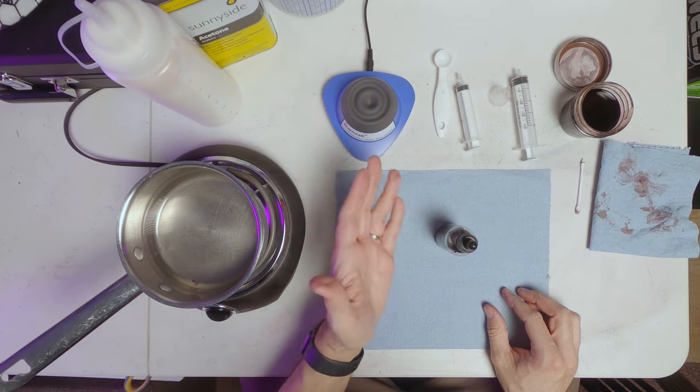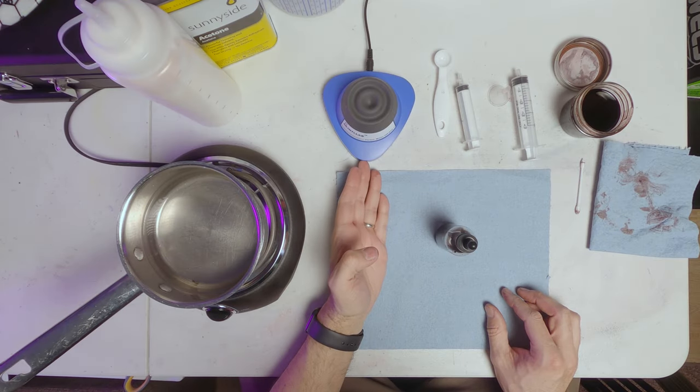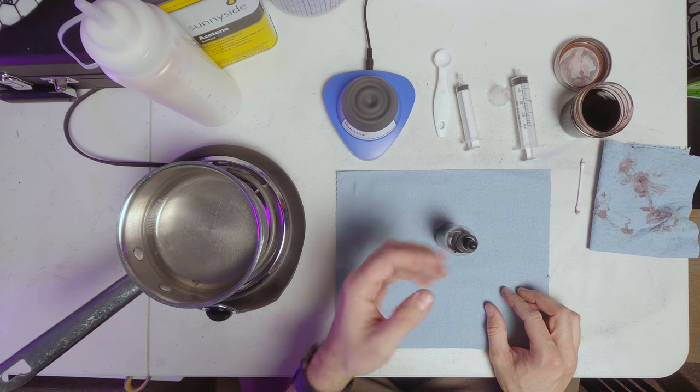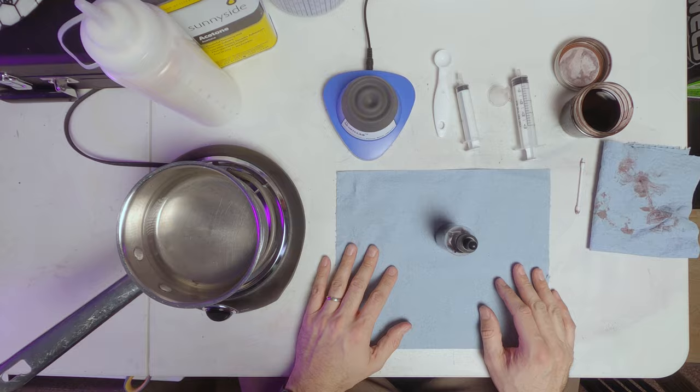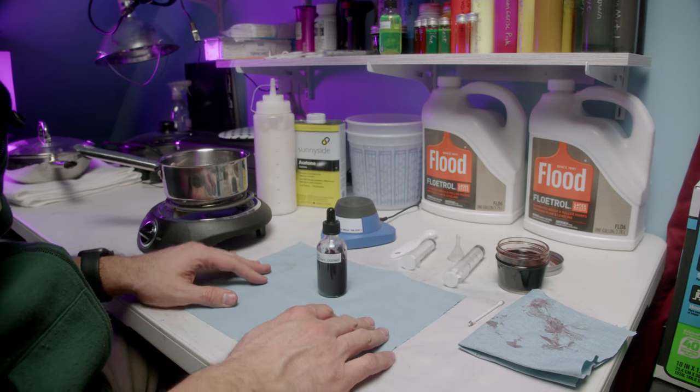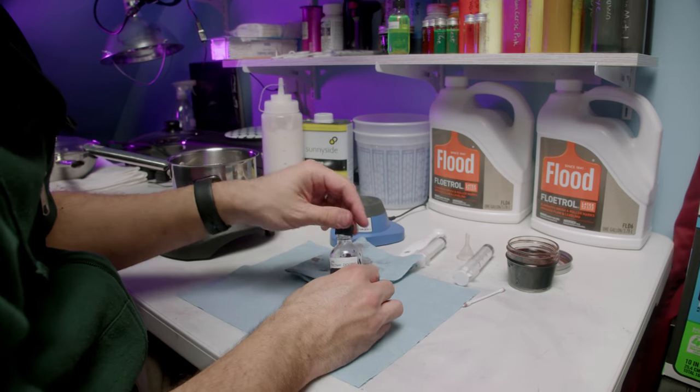Doesn't take long. Again you don't need this mixer. You can shake it by hand. It's just a faster way of doing it. I got it on Amazon and I'll have the link in the description for that. So now that we have our water and dye mixture, open up the jar.